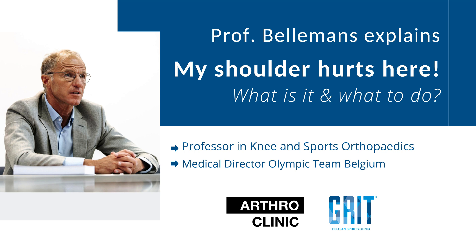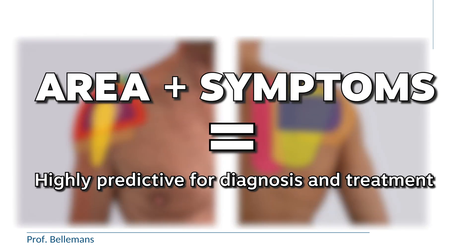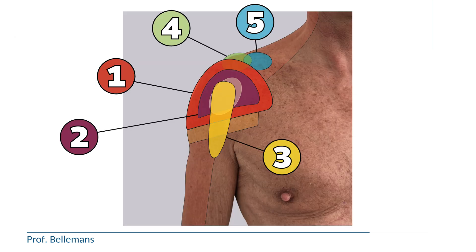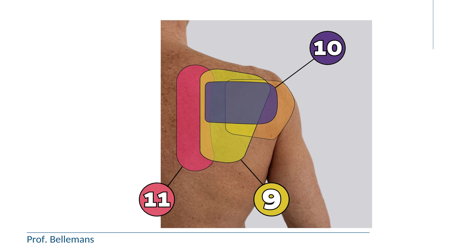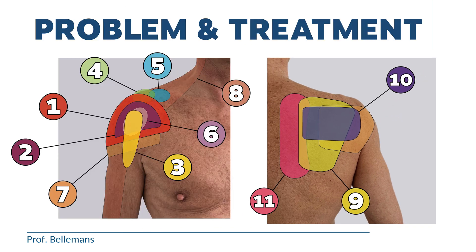The exact location of the pain is one of the most important factors when you want to know what is going on in your shoulder. The area of the pain, together with the other symptoms, is highly predictive for the diagnosis and the possible treatment options. In the next minutes I will describe the 12 most common pain zones in the shoulder, what they precisely mean in terms of the problem, and which treatment options there could be.